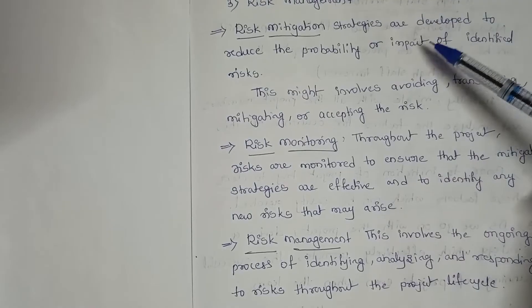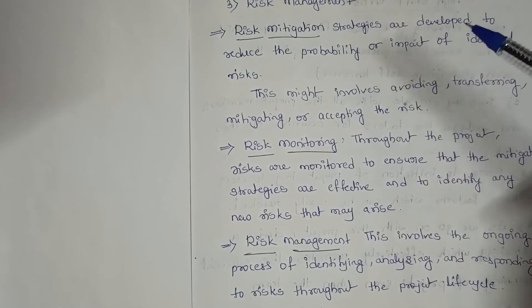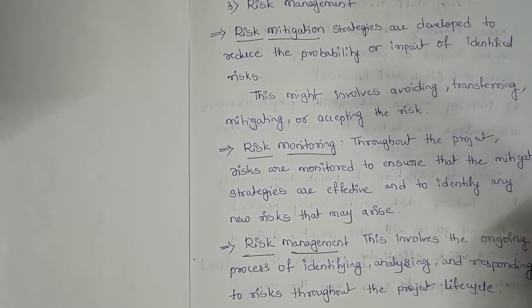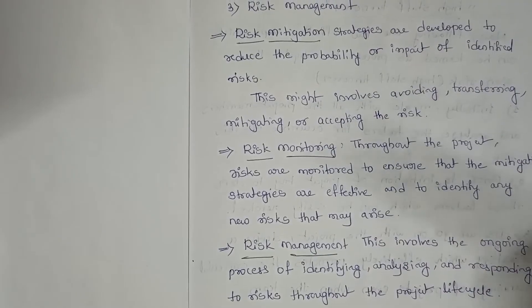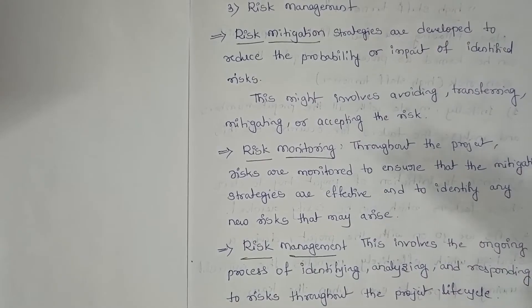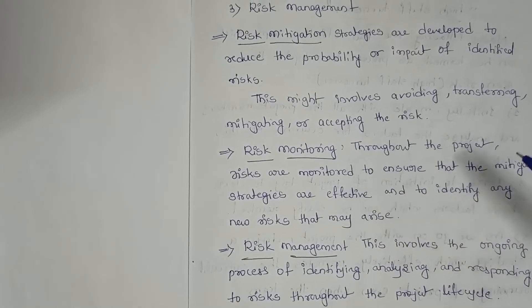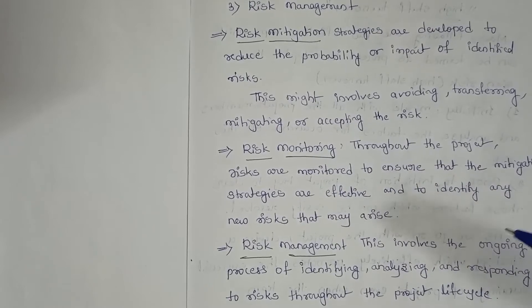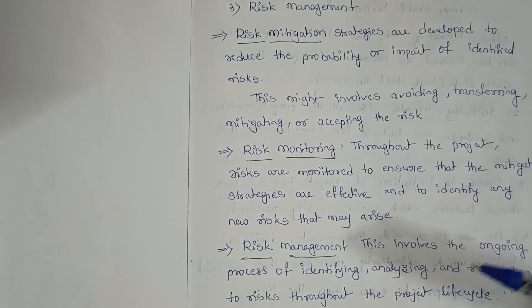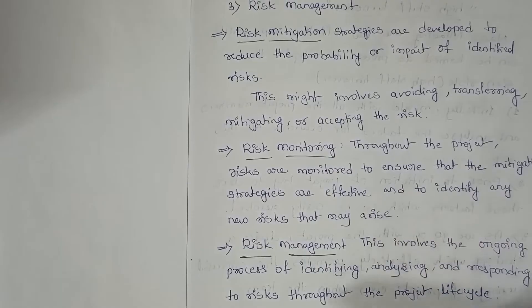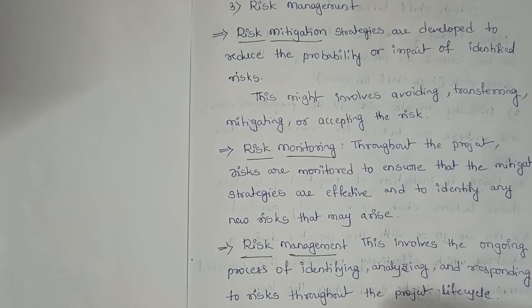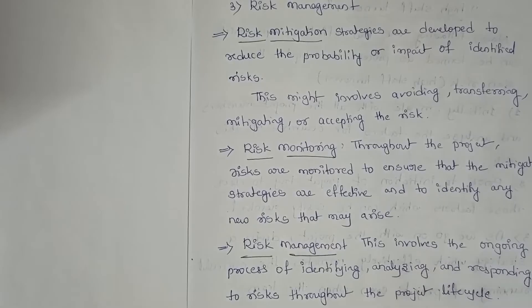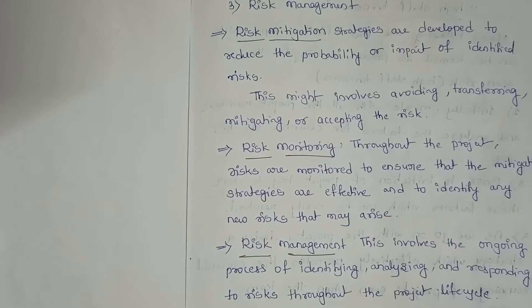In risk mitigation, strategies are developed to reduce the probability or impact of identified risk. This might involve avoiding, transferring, mitigating, or accepting the risk. Coming to risk monitoring, throughout the project, risks are monitored to ensure that the mitigation strategies are effective and to identify any new risks that may arise. Coming to risk management, this involves the ongoing process of identifying, analyzing, and responding to risk throughout the project life cycle.